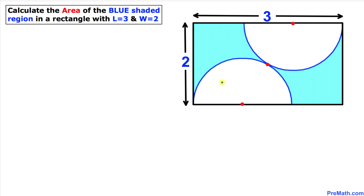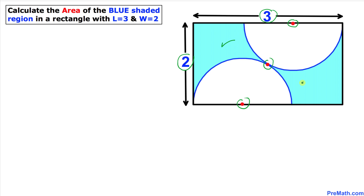Welcome to Pre-Math. In this video tutorial we have two identical semi-circles in a given rectangle that are tangent to each other. The dimensions of this rectangle are 3 and 2. One more thing: these three points are collinear. Now we are going to find the area of this blue shaded region.